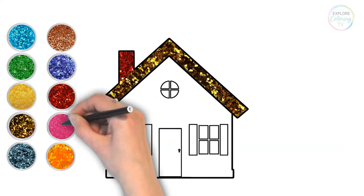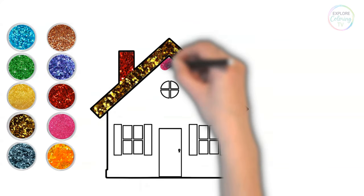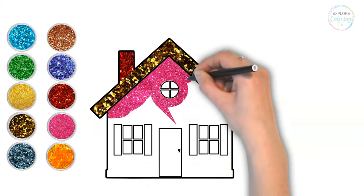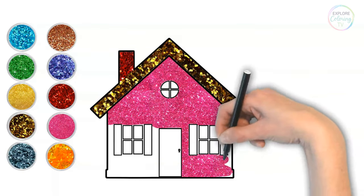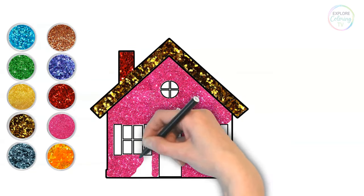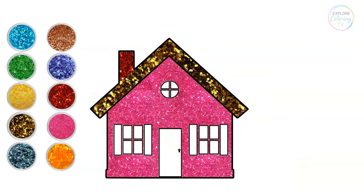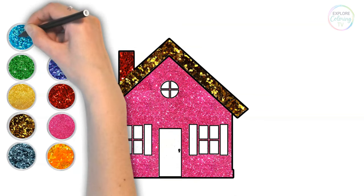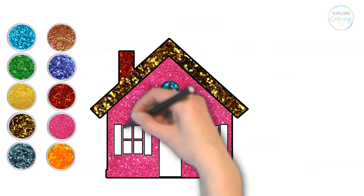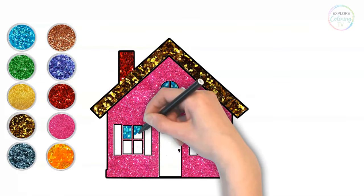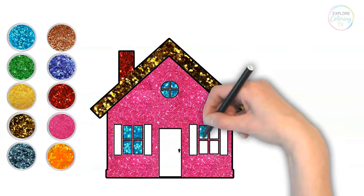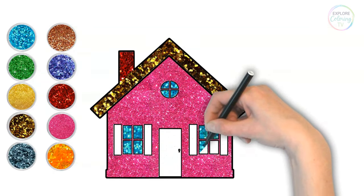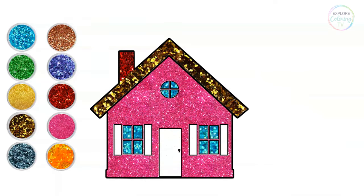Let's use pink for the main part of the house. What do you think about the pink? For the windows, sparkly blue. Ooh, look at that blue. And for the window shutters, we'll go for a nice teal.